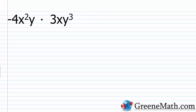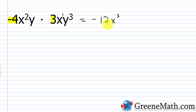Let's look at another example: negative 4x squared y multiplied by 3xy cubed. Multiply the number parts first — negative 4 times 3 gives negative 12. Then the variable parts: x squared times x is x cubed, since we add exponents 2 and 1. For y: y to the first times y cubed — add exponents 1 and 3 to get y to the fourth. The answer is negative 12x cubed y to the fourth power.